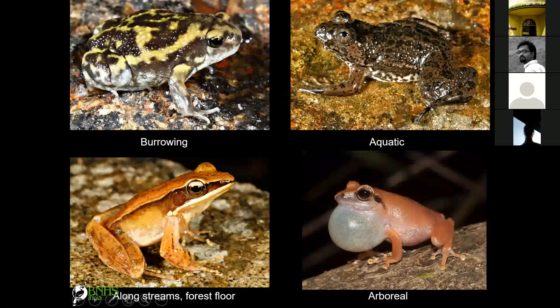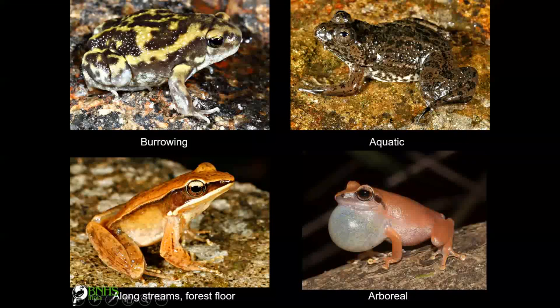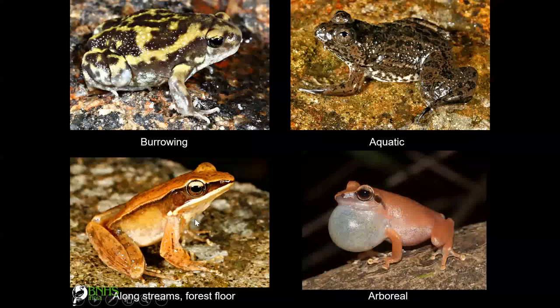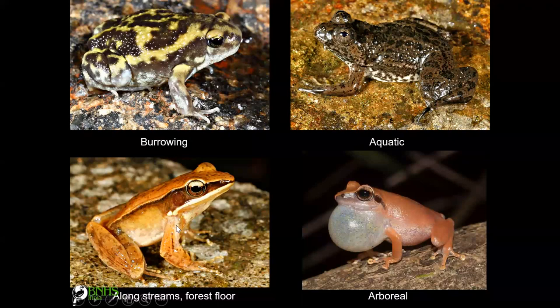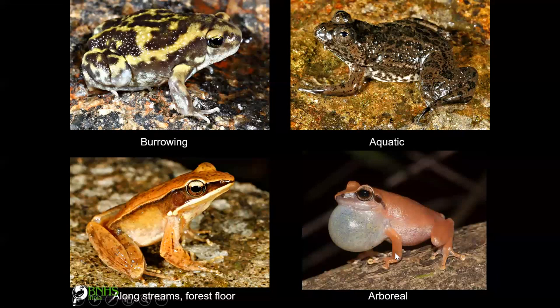Some amphibians burrow — this is a burrowing species. The cricket frog (afflicted species) is always seen on the surface of stagnant water pools. Hylarana ranchiaca is found along fast-flowing streams but along the sides, not inside the streams. There are also arboreal frogs like bush frogs, which we will look at in detail later.